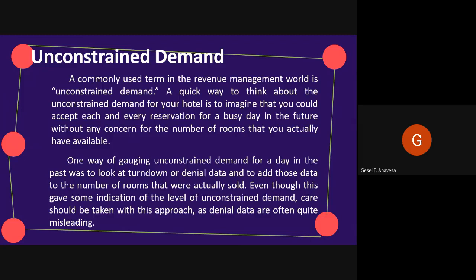For example, a guest may call to make a reservation but be denied because the hotel is full. The same guest may then get a travel agent to call, but the hotel is still full and so that call is denied too. The guest may try again the next day and again be denied. However, when they call again the day after, the booking is taken. As there is typically no way of linking a denial record to a specific guest, adding the denial data and total rooms sold will overestimate demand — the guest only wanted one room.